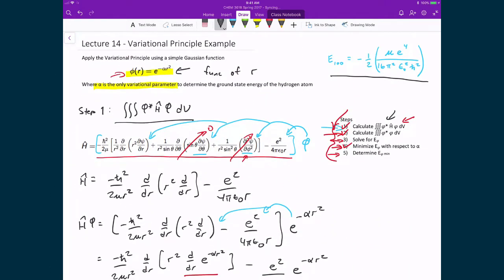That's what we've been solving this whole time. We've been saying that we're going to apply the variational principle, and in this case we use this very simple trial wave function to basically find the ground state energy of the hydrogen atom.